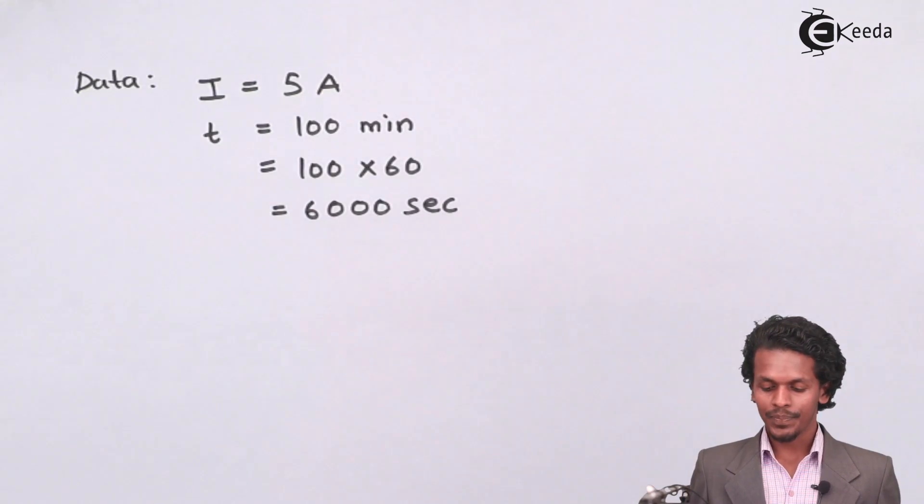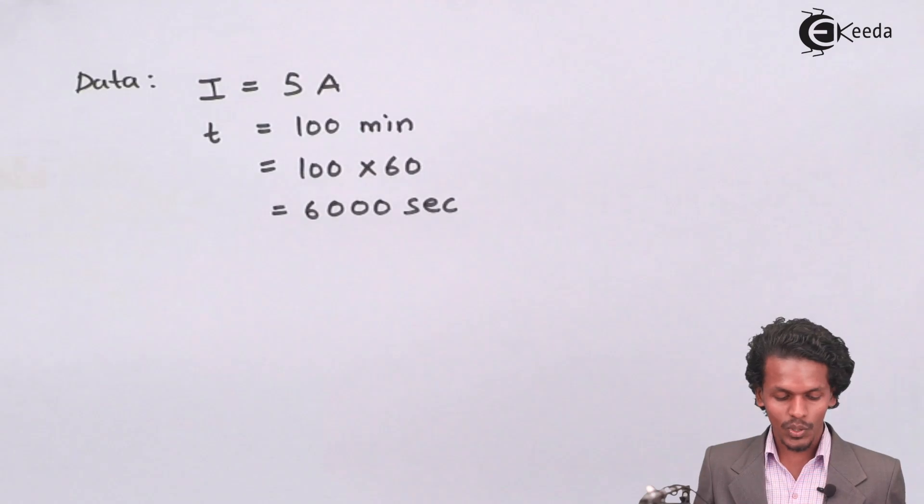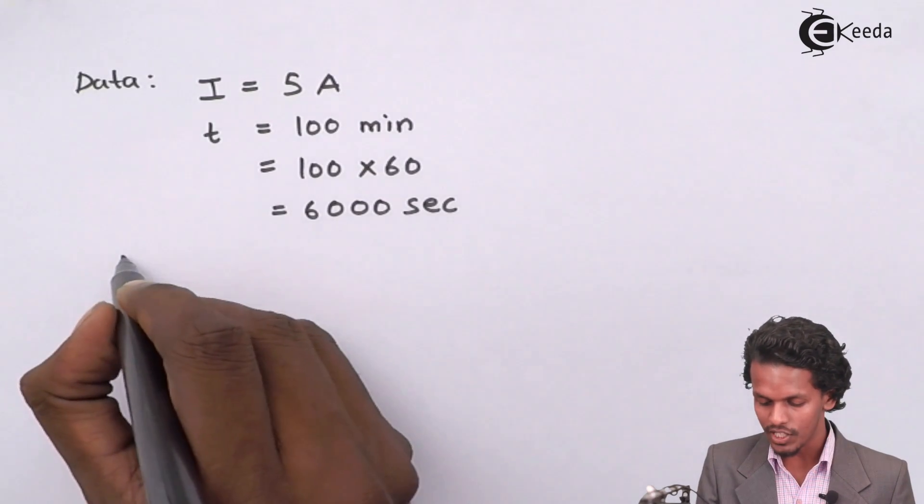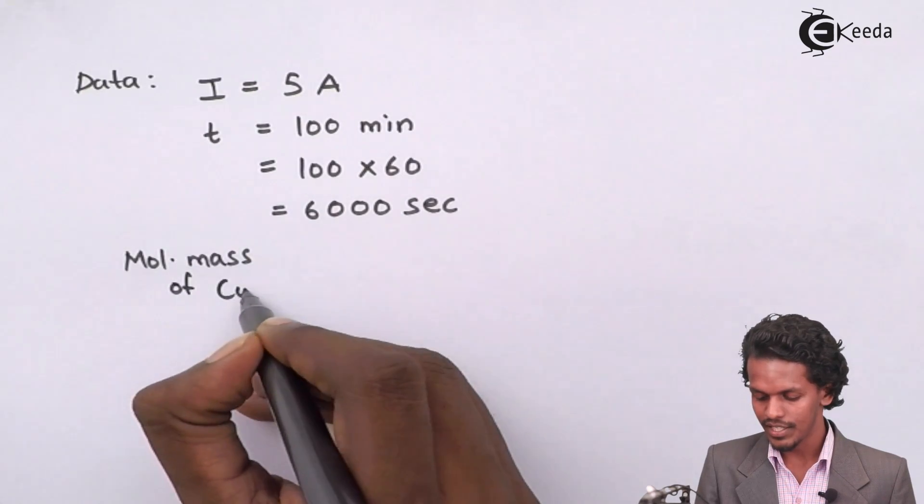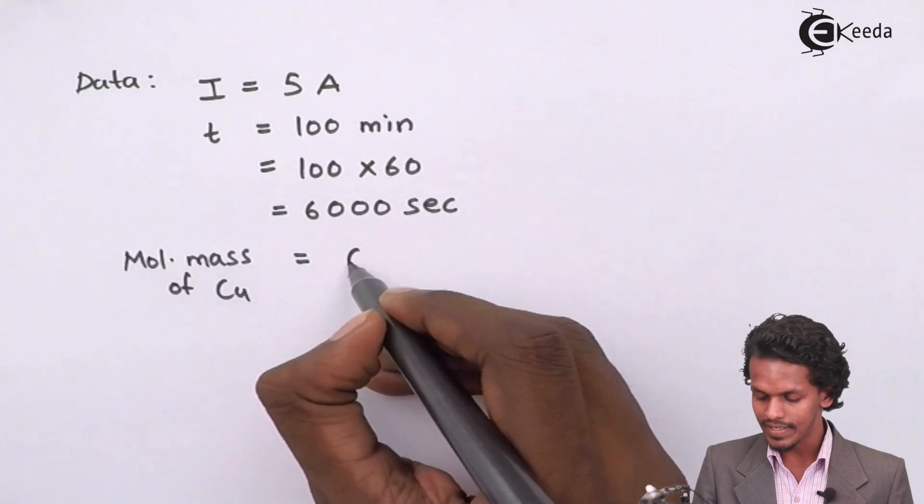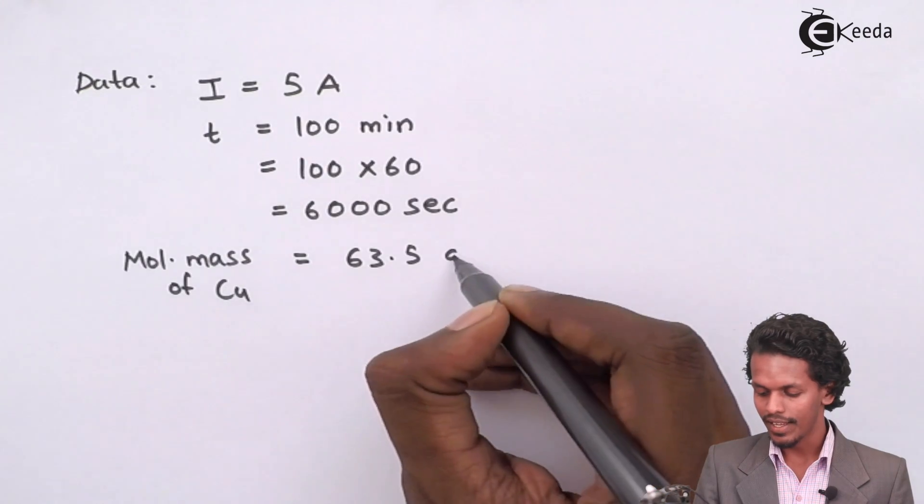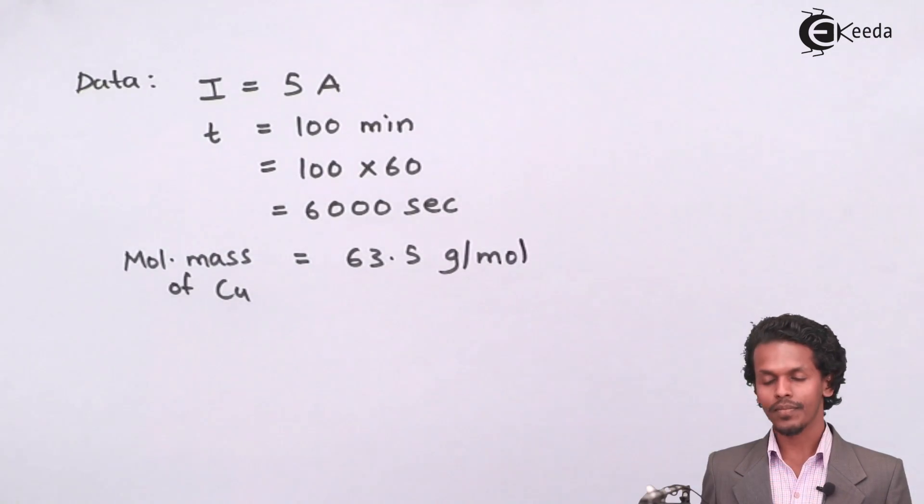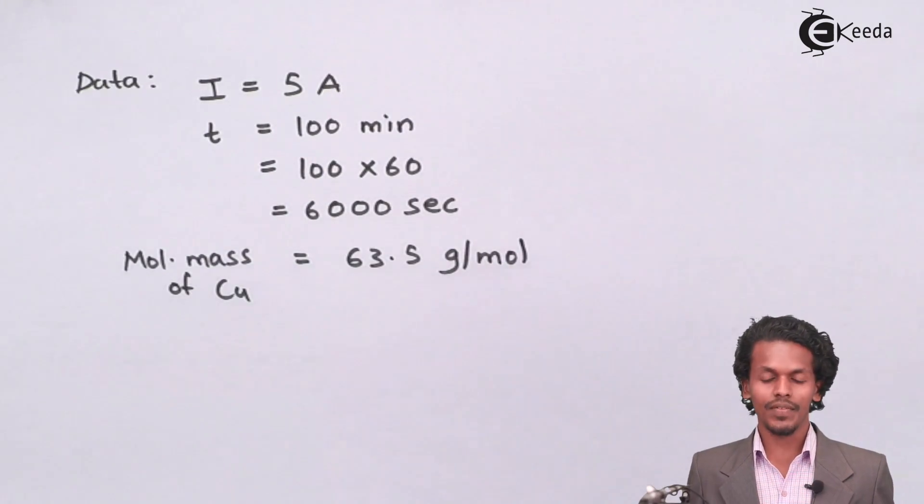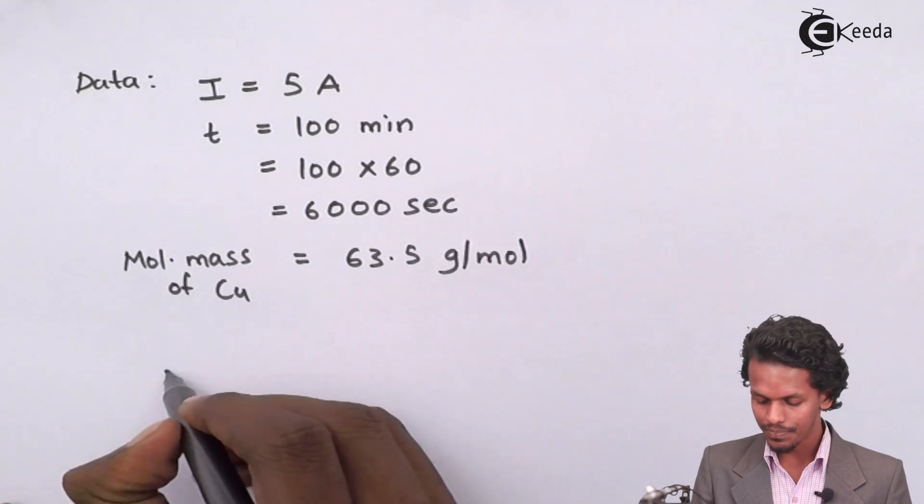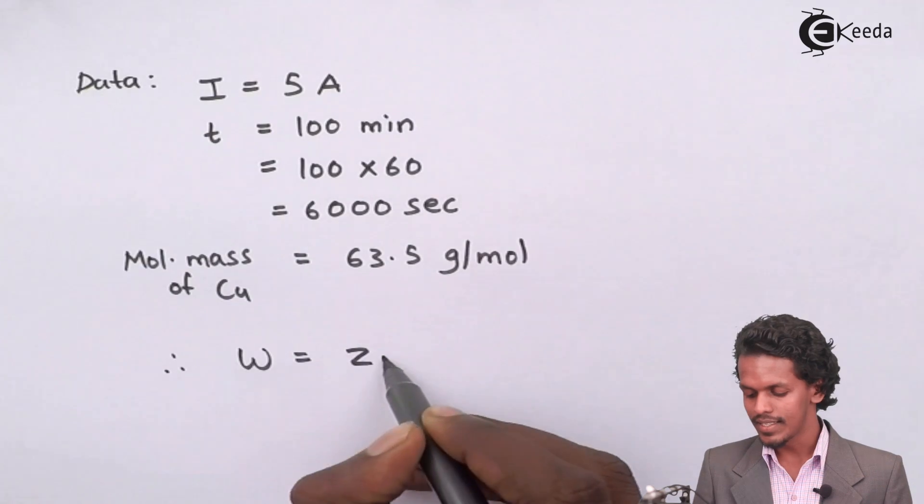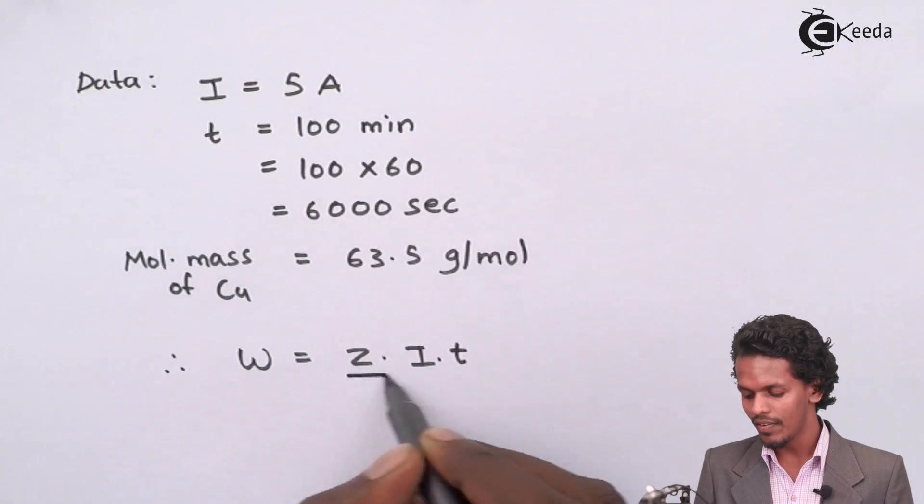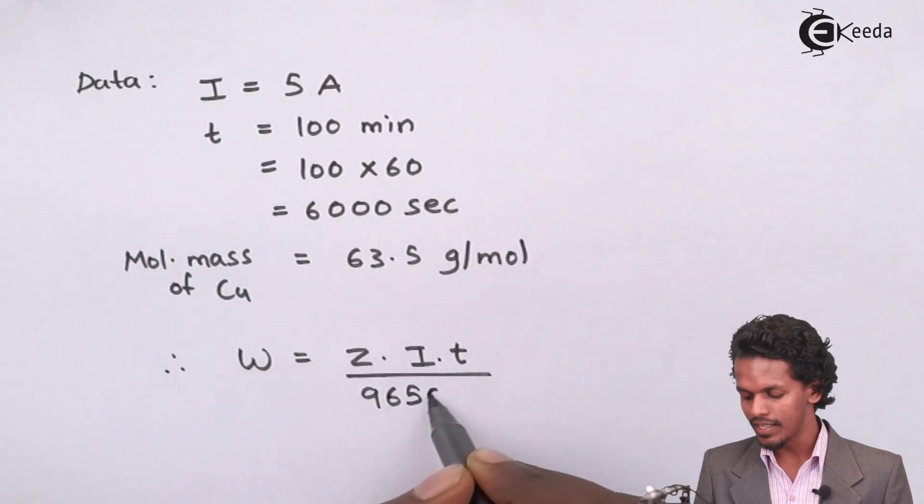The next important thing is the molar mass of copper, which they provided as 63.5 gram per mole. The formula we have is W equals ZIT divided by 96,500.